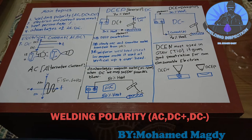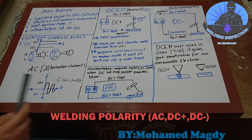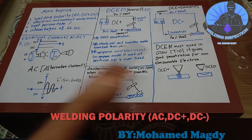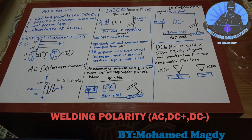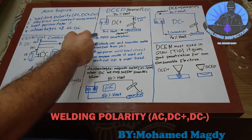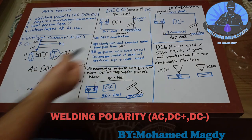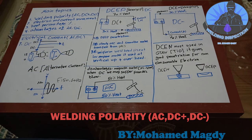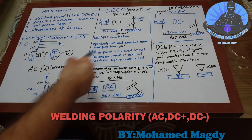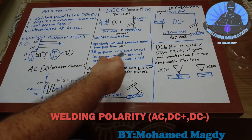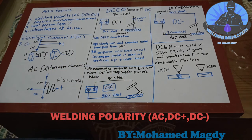Direct current electrode negative is most used — not for small welds but for good penetration. Direct current electrode positive gives deep penetration, a steady arc, and the most metal transfer compared to AC. Uniform weld bead size at low amperage makes it useful for vertical-up and overhead welding. However, we may suffer from arc blow.